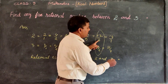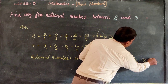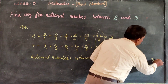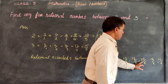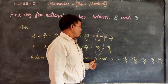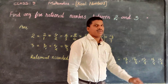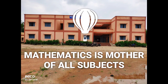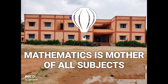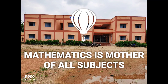After 12 by 6, the numbers are 13 by 6, 14 by 6, 15 by 6, 16 by 6, and 17 by 6. How many numbers did we get? 1, 2, 3, 4, 5. So the five rational numbers between 2 and 3 are 13 by 6, 14 by 6, 15 by 6, 16 by 6, and 17 by 6. These are the numbers.